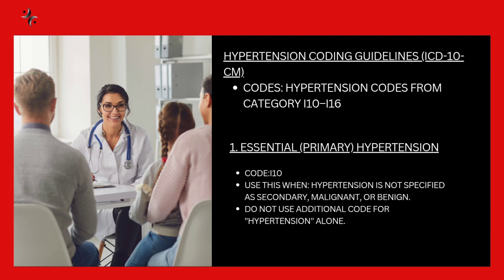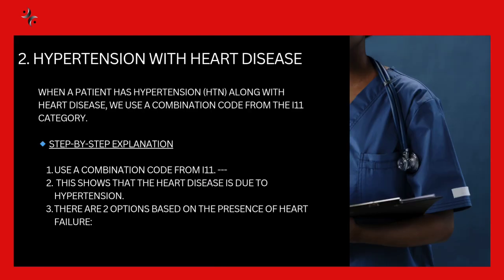Hypertension codes start from I10 to I16. Essential hypertension or primary hypertension — the code is I10. It is used when hypertension is not specified as secondary, malignant, or benign. Do not use any additional code for primary hypertension.